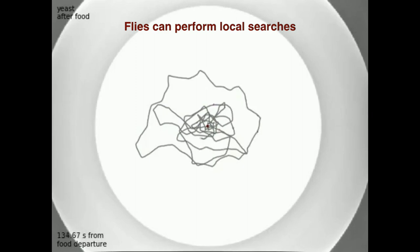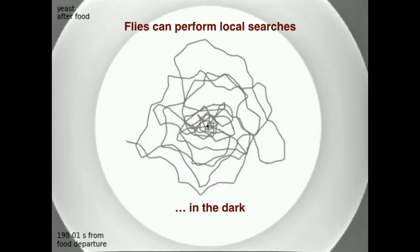In a series of experiments, our lab showed that flies are able to execute this local search in total darkness and with odorless food such as sucrose. This means that they can keep track of their position using only internal cues, a navigation behavior called idiothetic path integration.